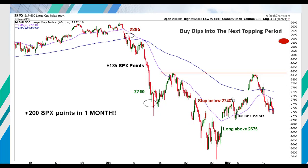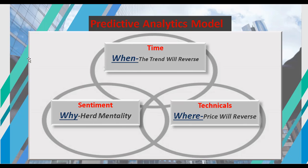Instead of shorting here, we said do not chase this rally. We got long here, and we sold our long on this gap up and stretch, then came down and went higher. Once we had this big gap up over resistance, we said do not chase this rally because we had bearish divergences and a 91% sentiment reading. But it's not a short position because we're still in a bullish time period. So you just step aside, wait, and now you look to buy the dips. That's really the method of this predictive analytics model.